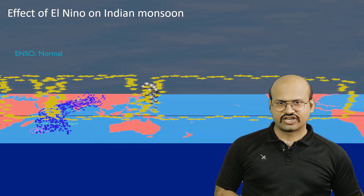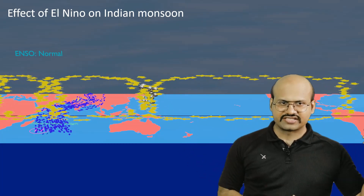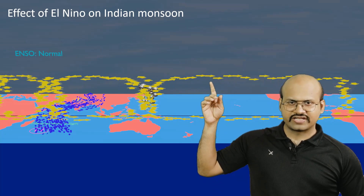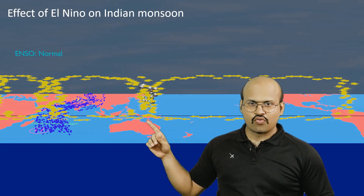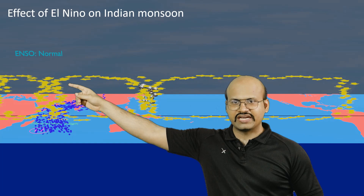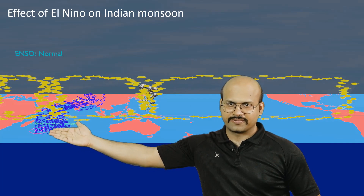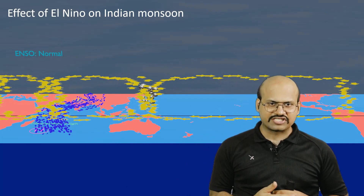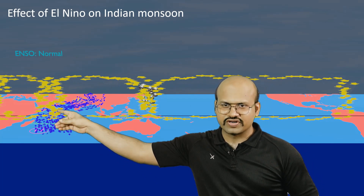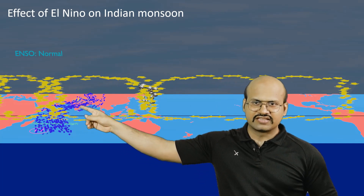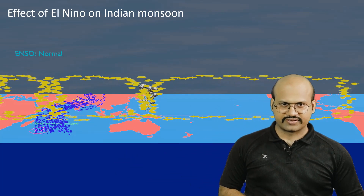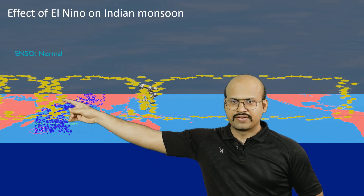Under normal circumstances, the Walker cell rises above Australia and descends over the South American region. This cell is linked with similar cells in other parts of the world. One branch rises up, divides, goes towards the Indian Ocean, and descends in the southern Indian Ocean — the Mascarene region — creating a high pressure called the Mascarene High. This descending branch plays a very important role in increasing the amount of air which comes to our Indian subcontinent.